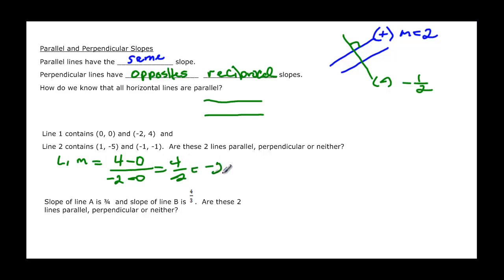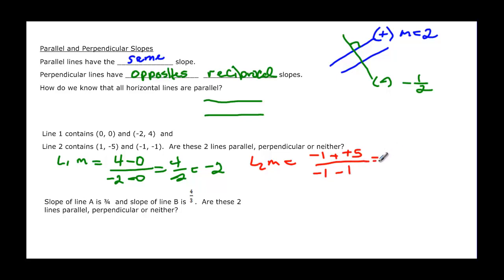That gives us negative two for line one's slope. For line two, the slope is negative one minus negative five, which is really plus five, over negative one minus one. So negative one plus five is four, and negative one minus one is negative two, which reduces to negative two. So we know these are parallel because their slopes are exactly the same.